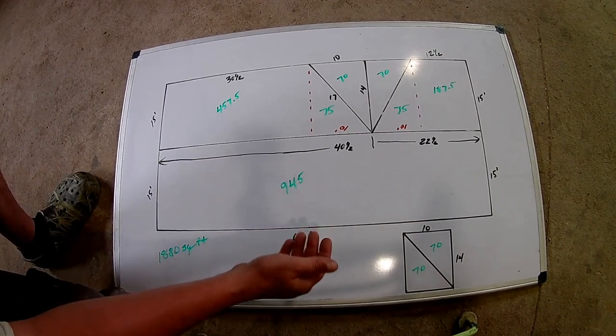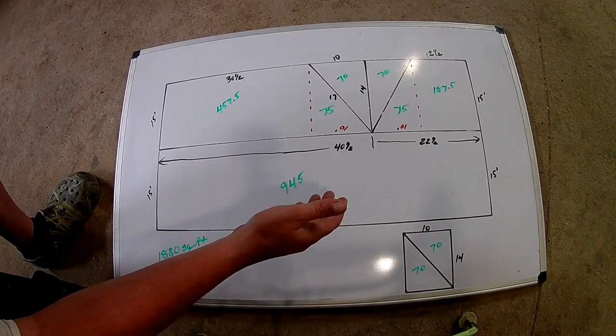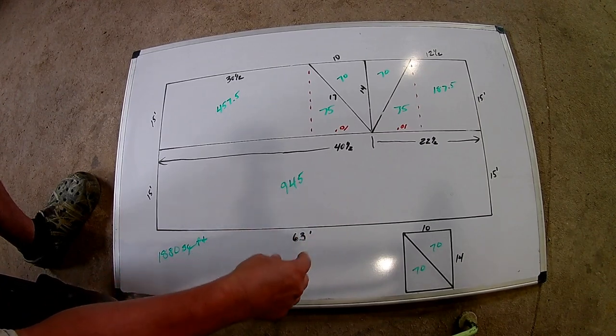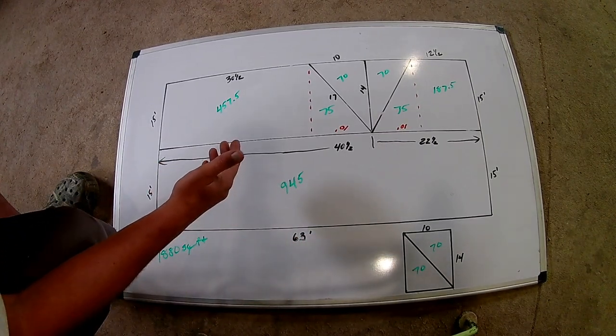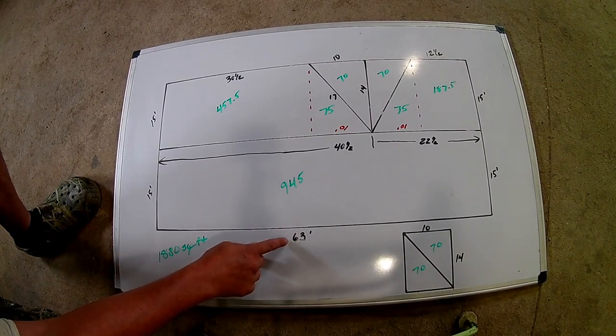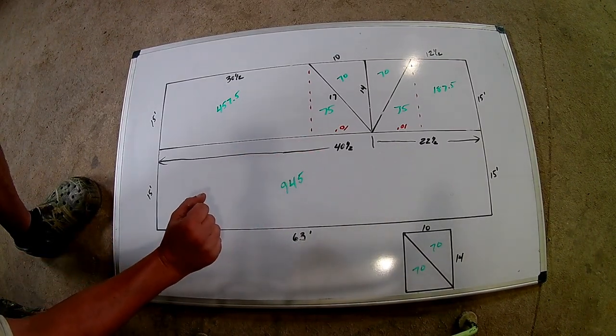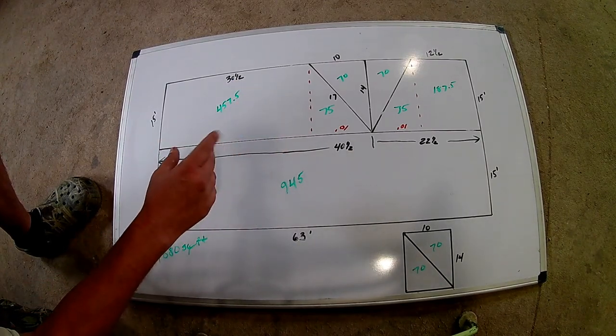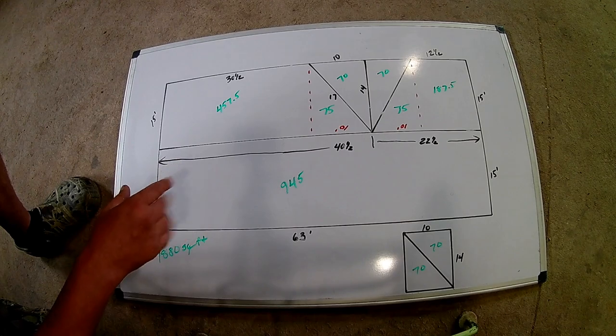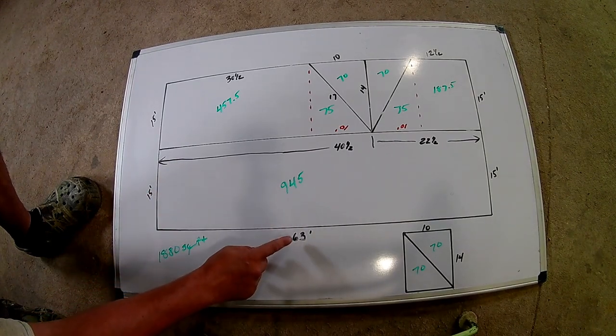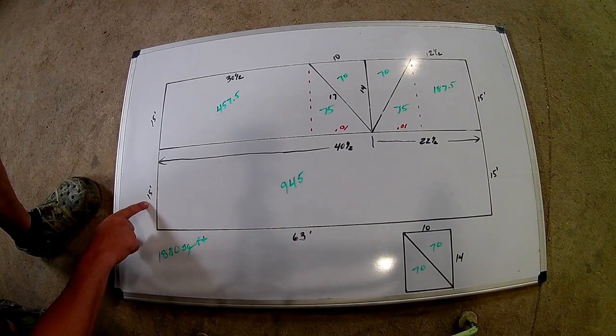All right, here is the first roof that we looked at. And this is drawn a lot better and more to scale on the whiteboard here. I've transferred all the measurements over. All of the original measurements are in black here. And I'm going to go over basically how you figure out the square footage and how you're going to get all this figured out.